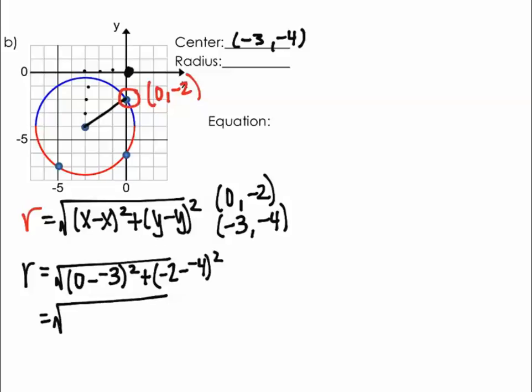Simplify this a little bit. 0 minus negative 3 is going to be positive 3 squared. Negative 2 minus negative 4 is going to be a 2 squared.